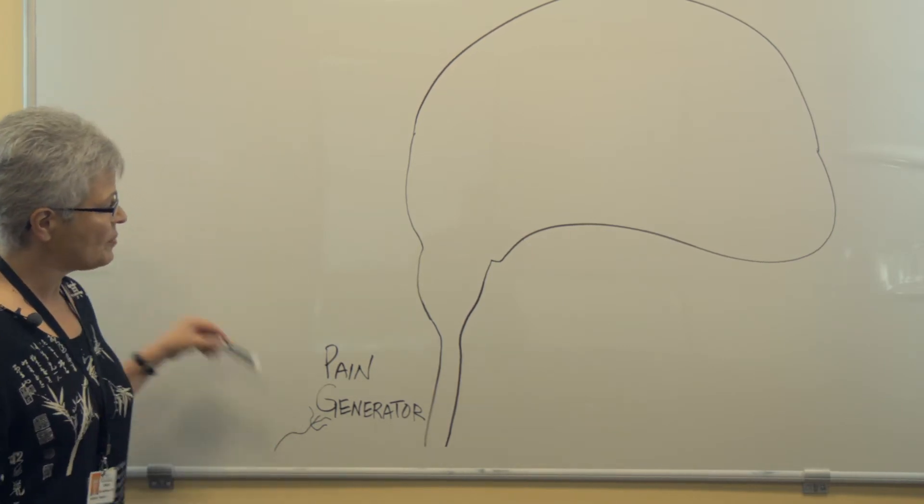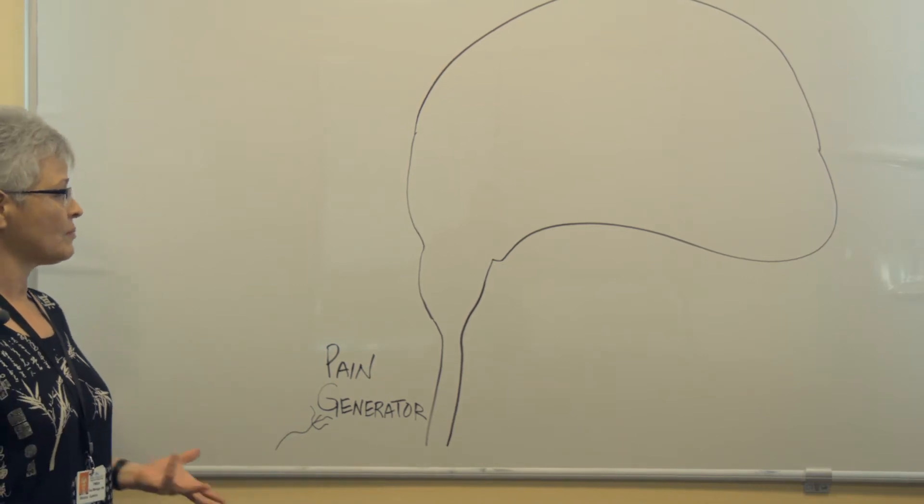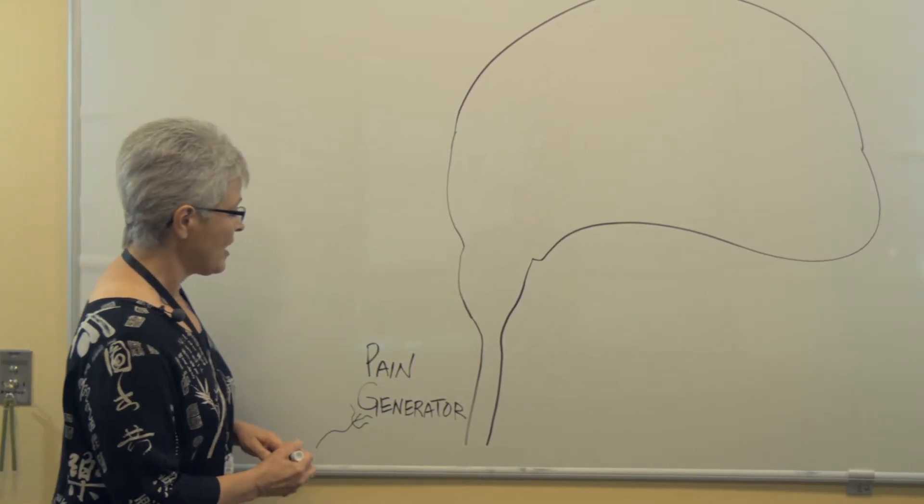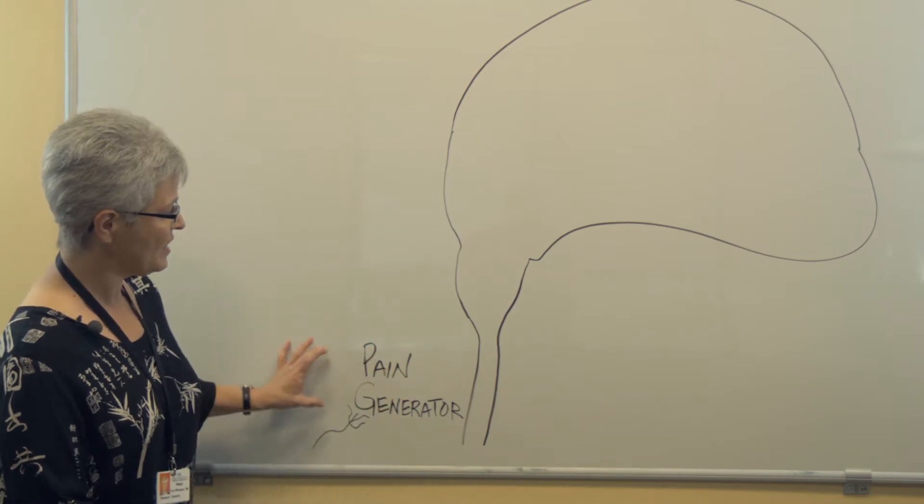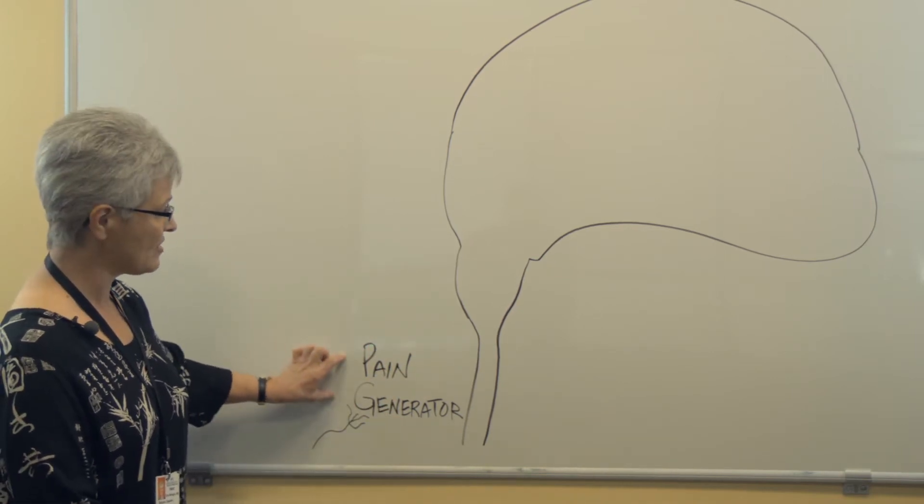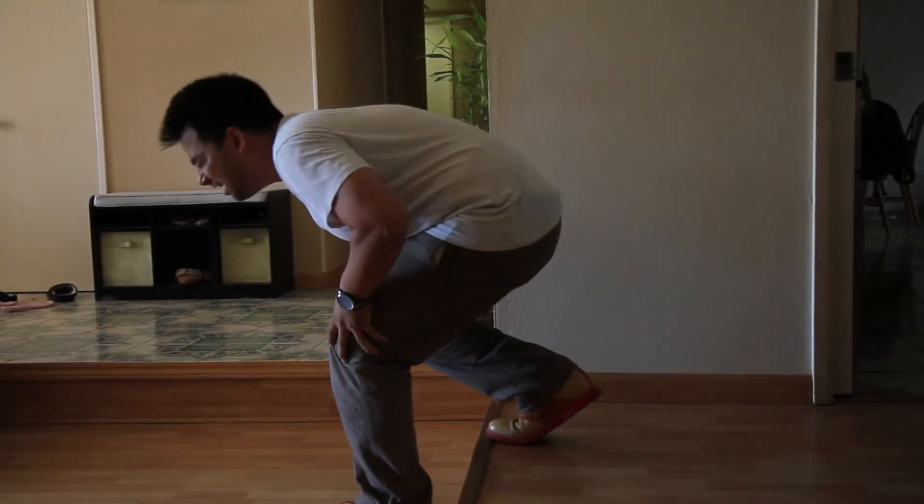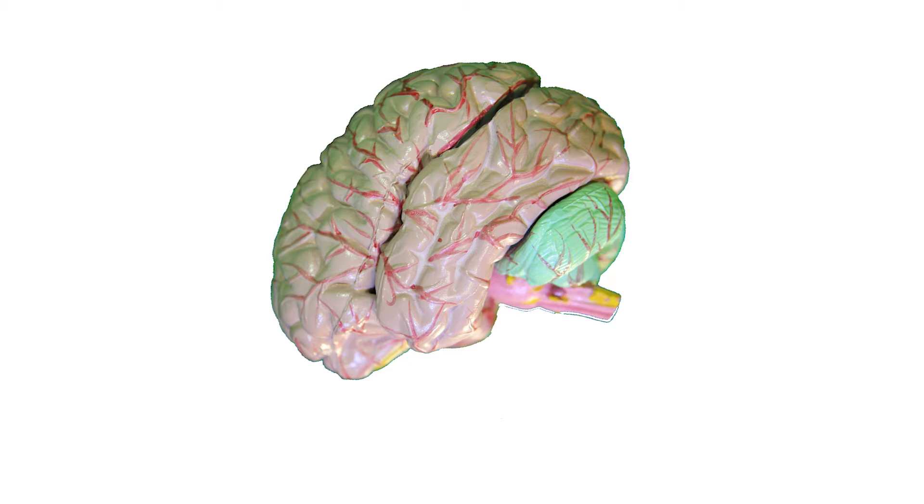So you start out with a pain generator in your body, something like arthritis, it could be a bulging disc compressing a nerve, it could be neuropathy, any number of things. And this pain generator is what we're going to call it because the pain generator isn't the pain feeling yet, it's just the alarm bell. And so the pain sensor detects either tissue damage or irritation and sends a signal up the spinal cord and it reaches a part of the brain that's considered a relay station.